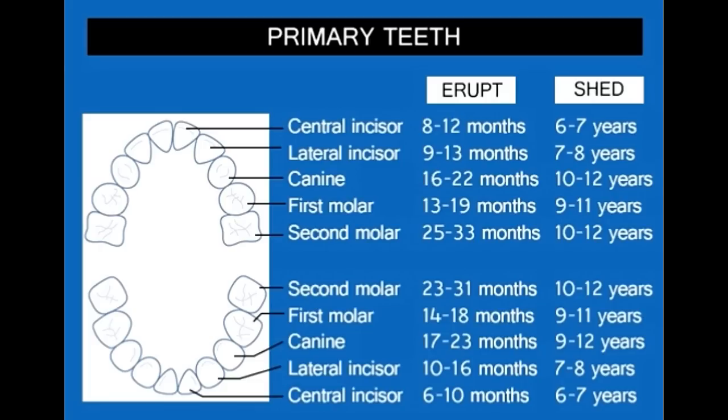The eruption of milk teeth/deciduous teeth: The first set of temporary teeth that appear in childhood is referred to as primary dentition. There are 20 primary teeth, and each dental arch includes 2 central incisors, 2 lateral incisors, 2 canines, 2 first molars, and 2 second molars. The term mixed dentition refers to the presence of a combination of primary and permanent teeth in children between the age group of 5 and 12 years.